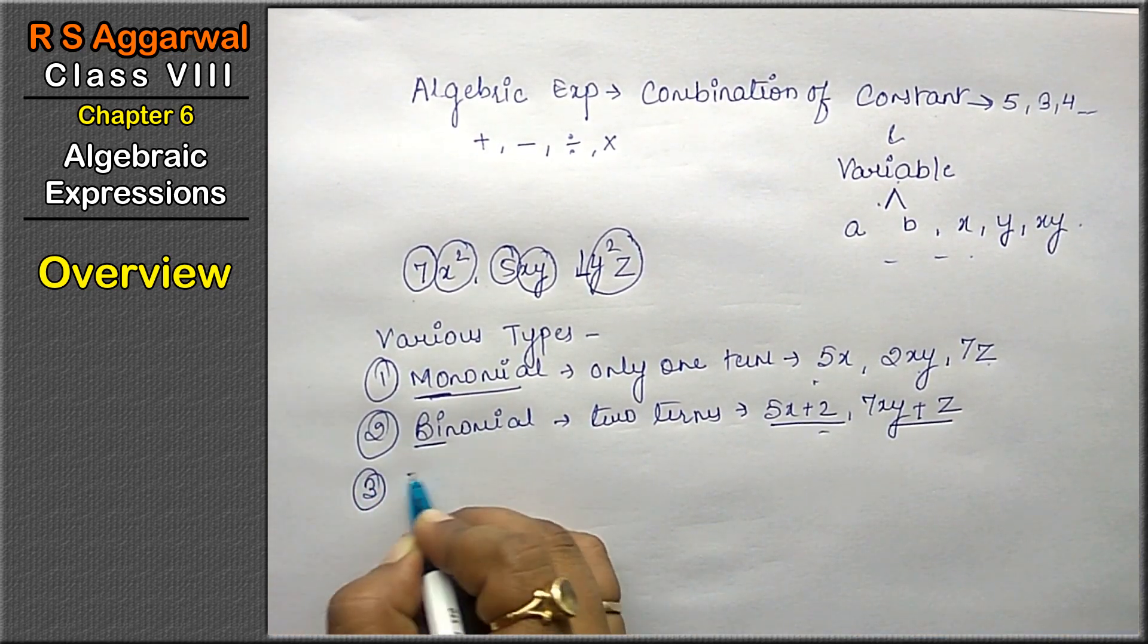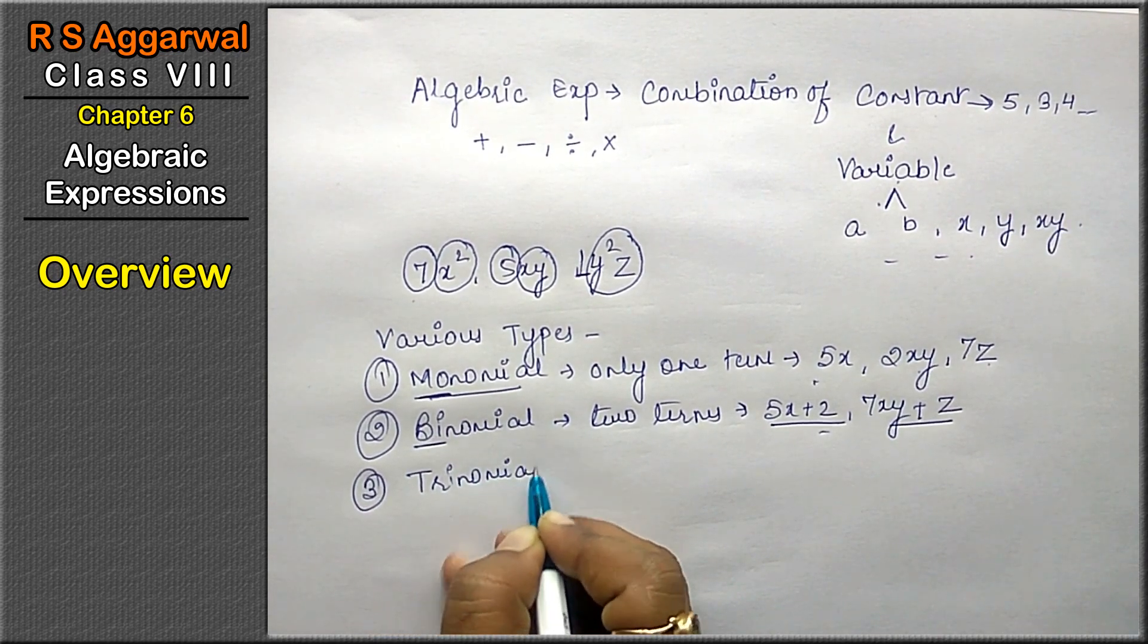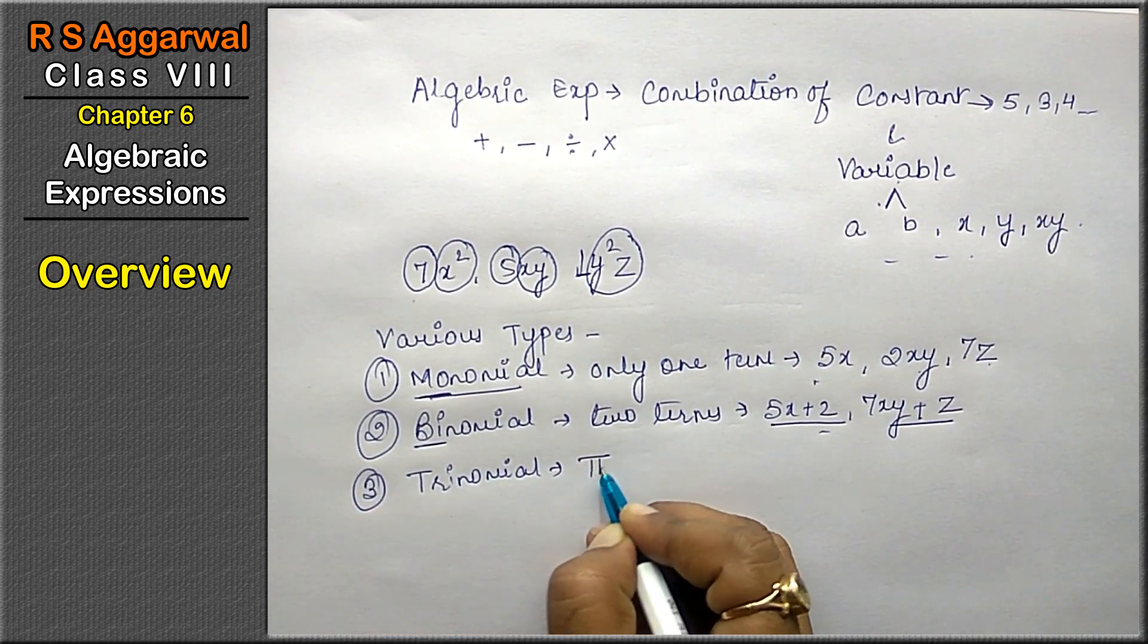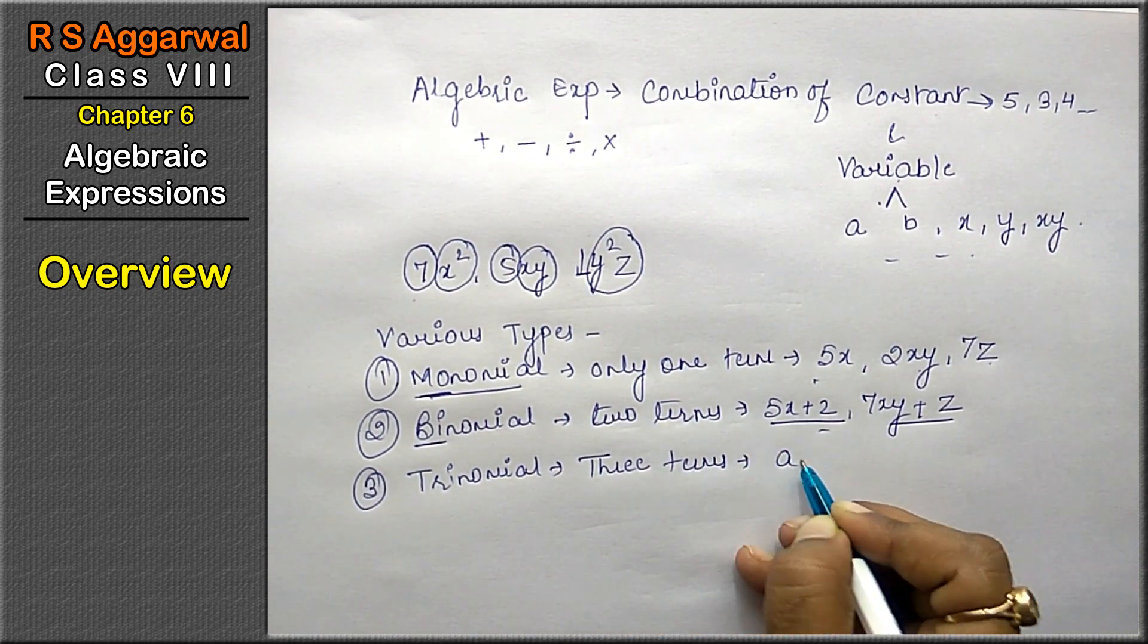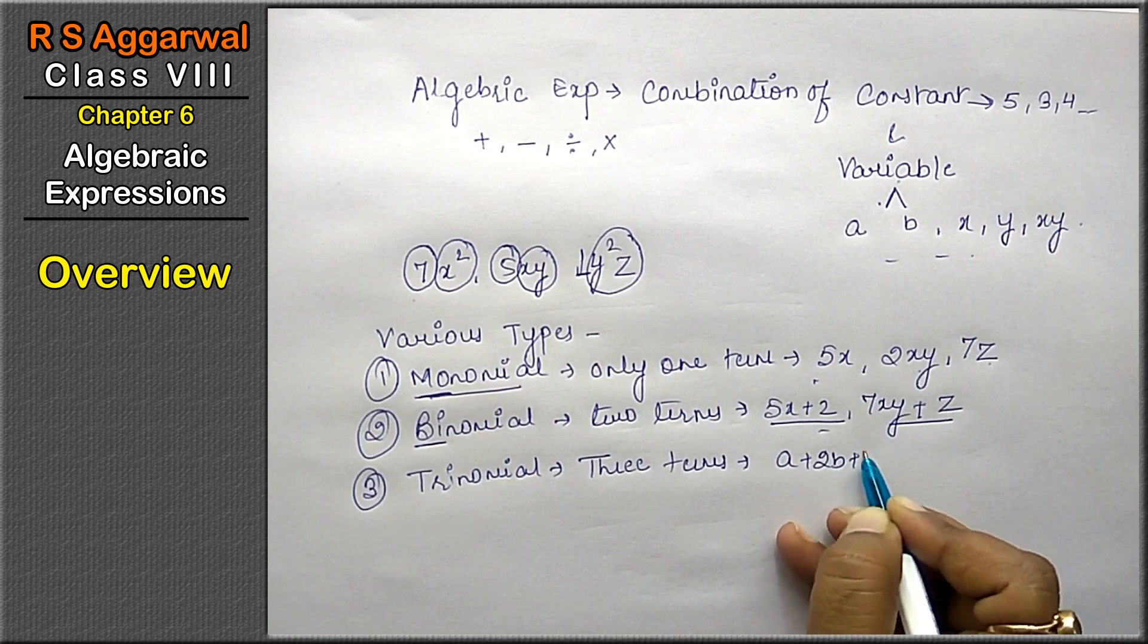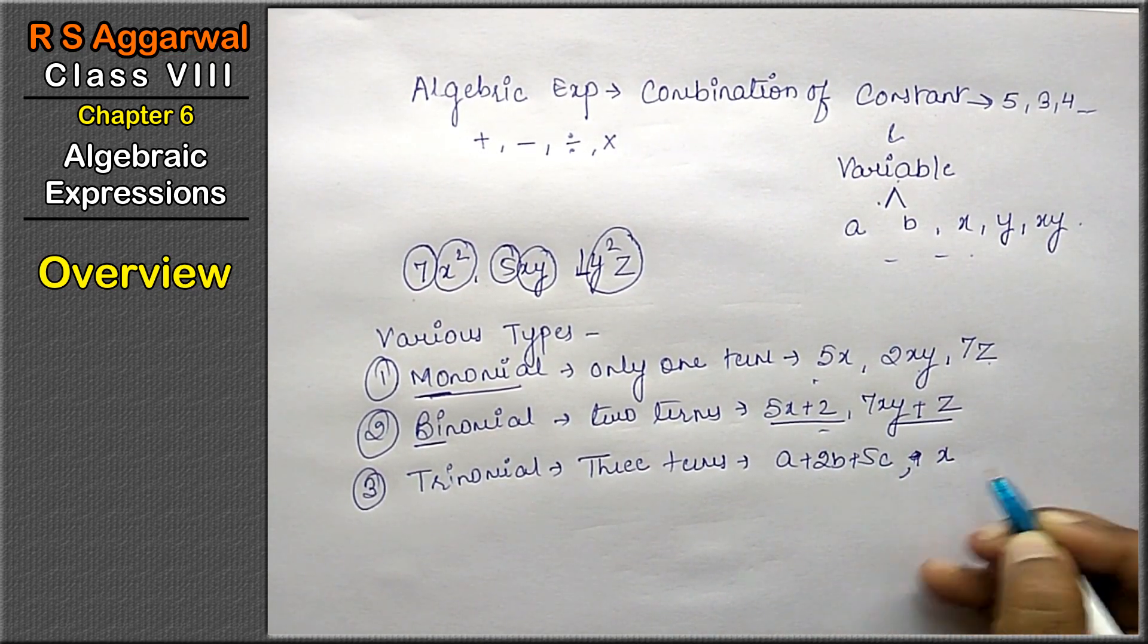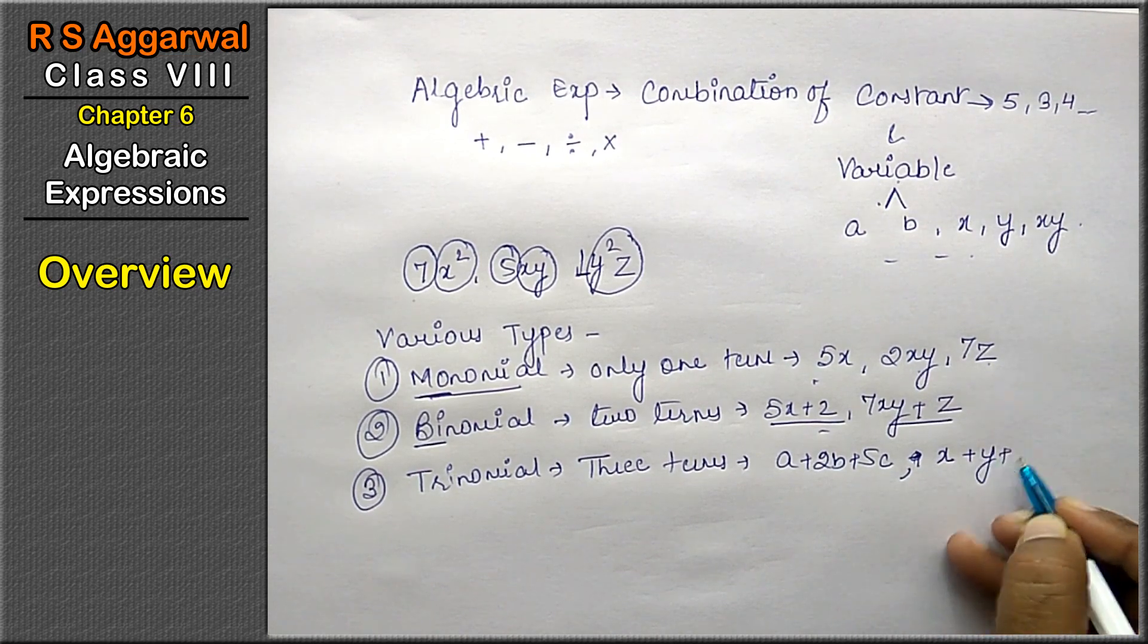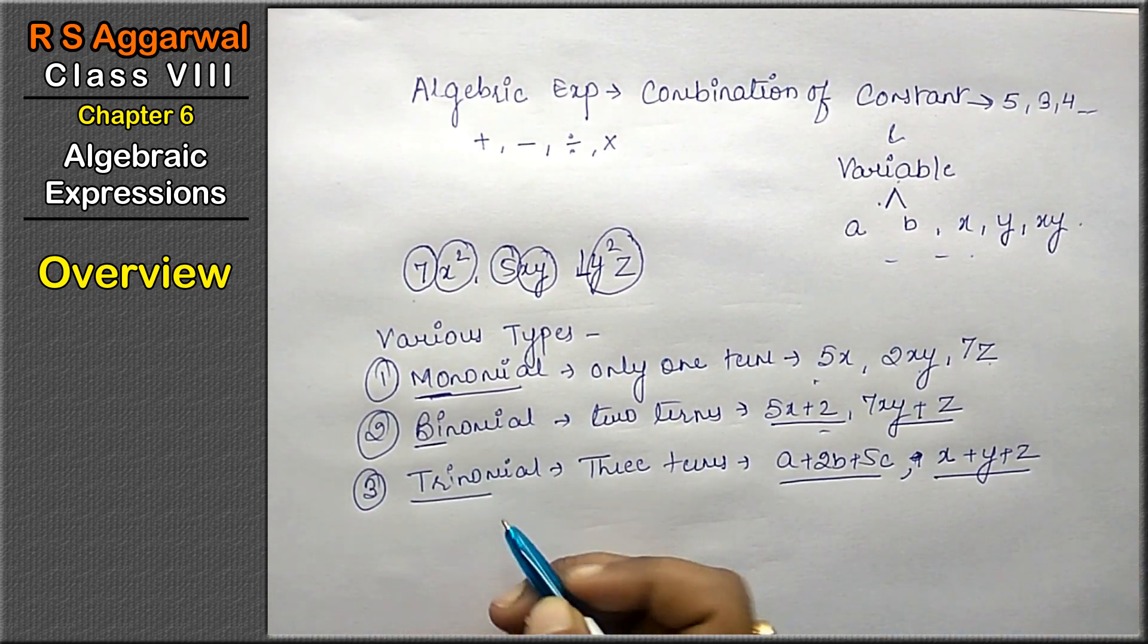Next is trinomial. What is trinomial? Tri itself suggests that it has three terms. Three terms like a + 2b + 5c, x + y + z. These three terms make a trinomial expression.